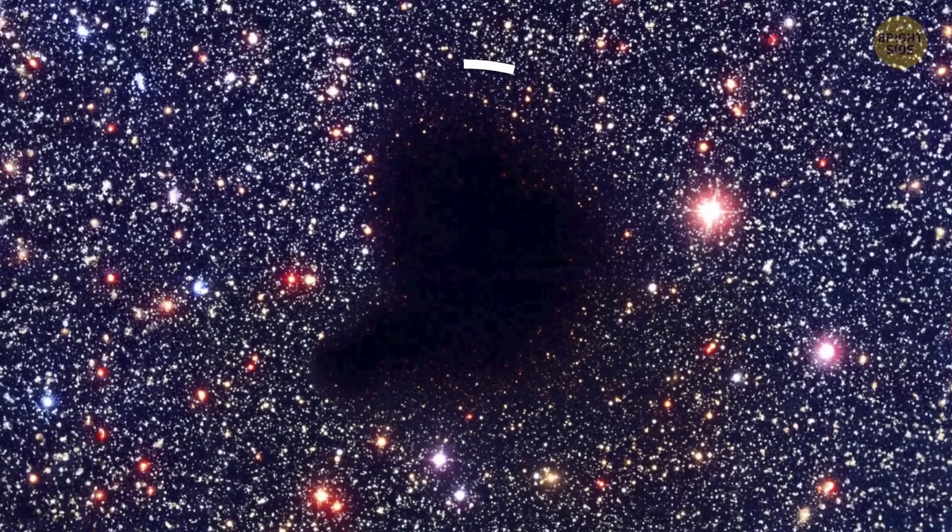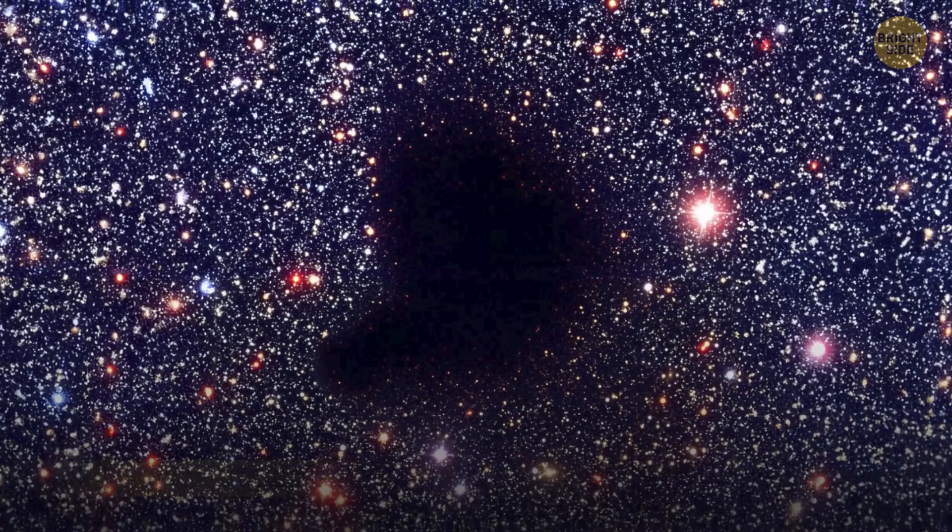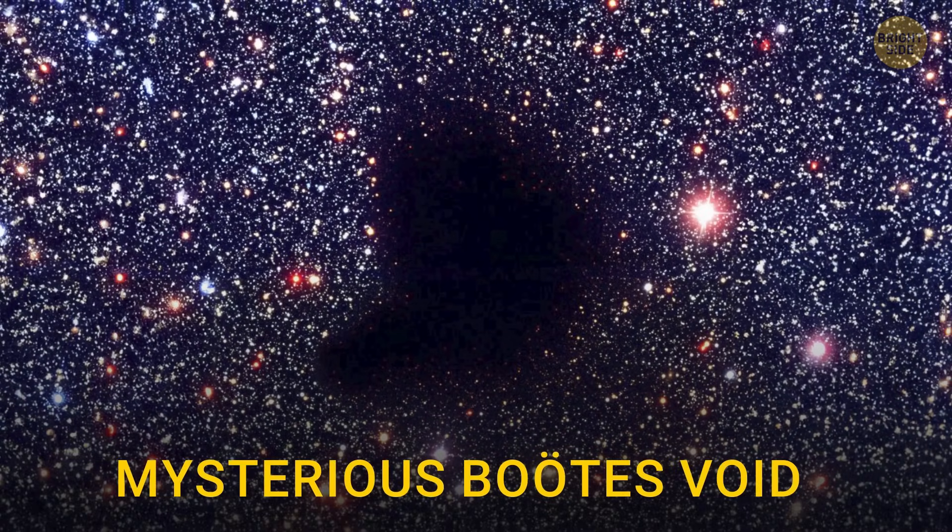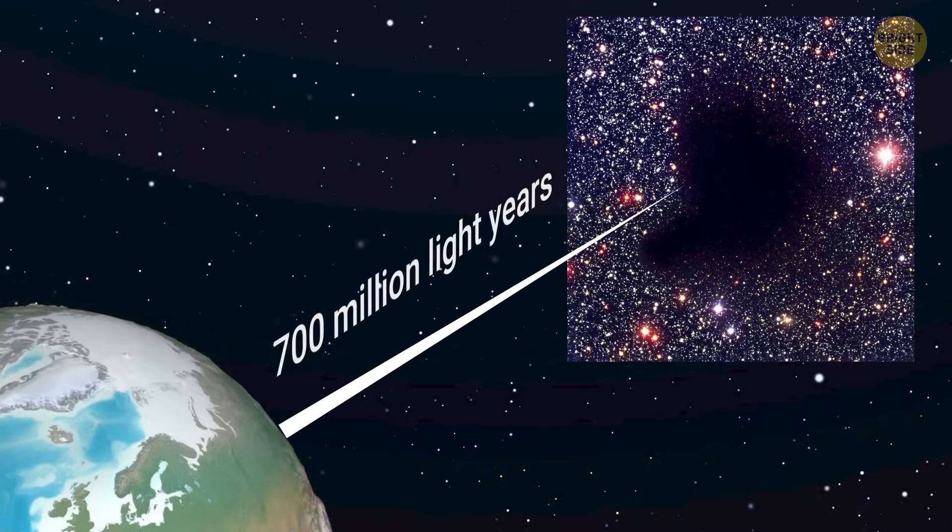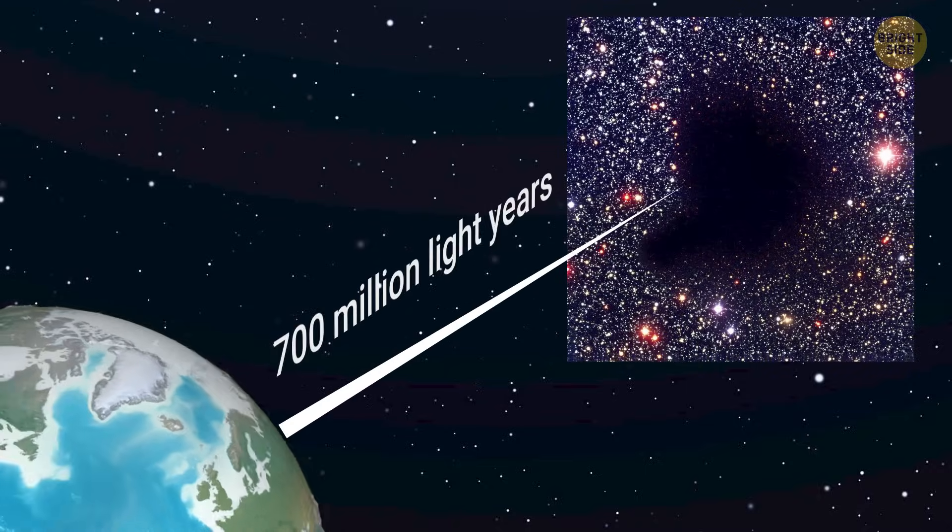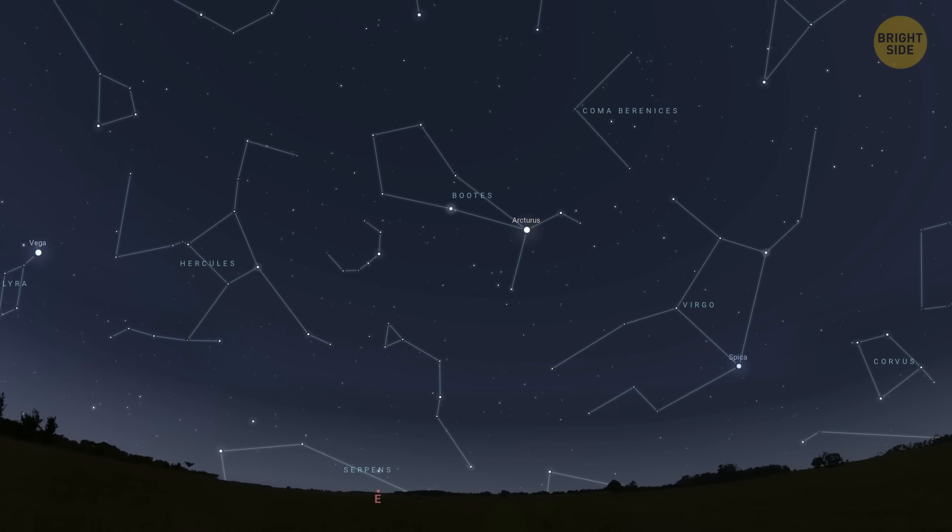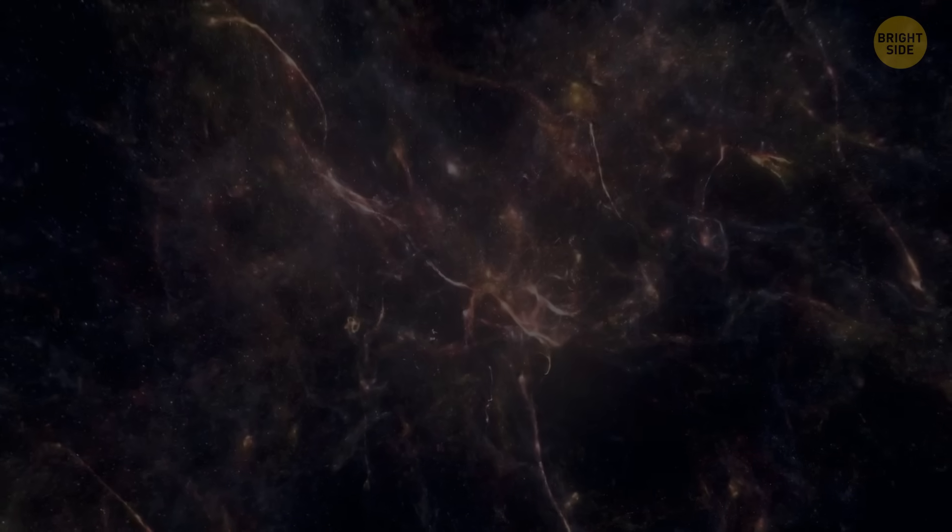And then, it dawns on you. What you're looking at is the mysterious Boötes void. It lies about 700 million light-years away from Earth in the constellation of Boötes, the herdsmen driving the plow around the North Pole. At first, this void was called the Great Nothing, but later it was given its current name.